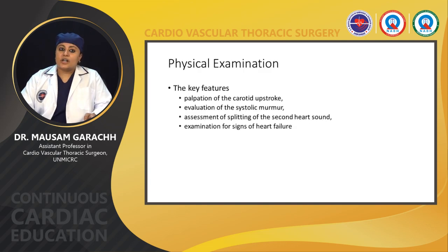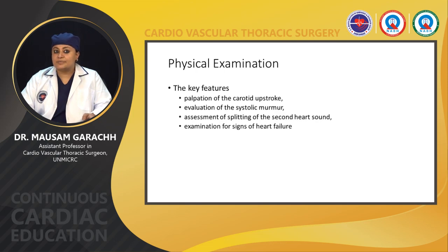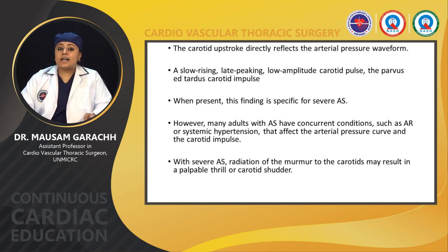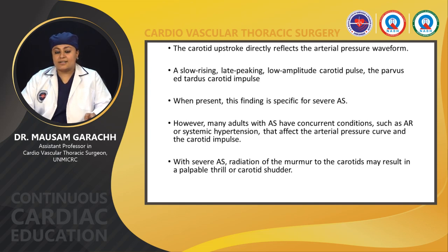Physical examination: key features are palpation of the carotid upstroke, evaluation of systolic murmur, assessment of splitting of the second heart sound, and examination for signs of heart failure. The carotid upstroke directly reflects the arterial pressure waveform. A slow-rising, late-peaking, low-amplitude carotid pulse — the pulsus tardus — is present in patients with aortic stenosis, and when present is specific for severe aortic stenosis. With severe aortic stenosis, there can be radiation of murmur to the carotid, resulting in a palpable thrill or carotid shudder.